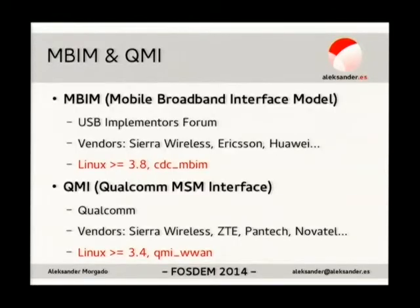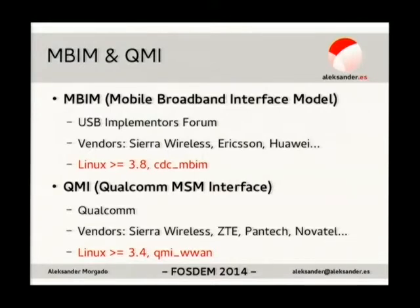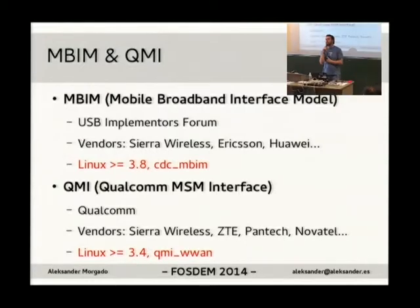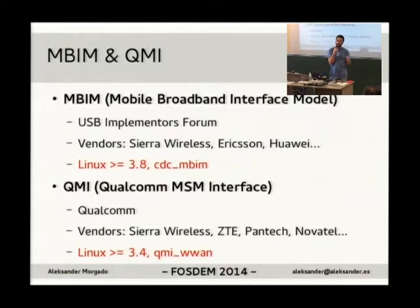So in particular, MBIM — which stands for Mobile Broadband Interface Model — is a new standard from the USB Implementers Forum. It's kind of an extension of NCM, if you know a bit about the USB standards. NCM is the standard which allows a USB device to expose a network interface, an Ethernet interface. In the case of MBIM, what it did is get rid of the Ethernet header, which is the main change in the network interface. You don't need an Ethernet header when you're going to connect to a mobile modem — so you can send IP packets directly to the network interface.